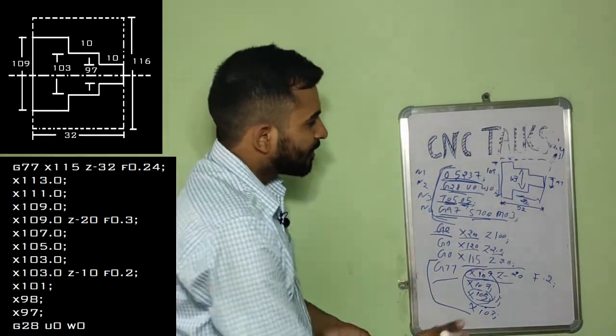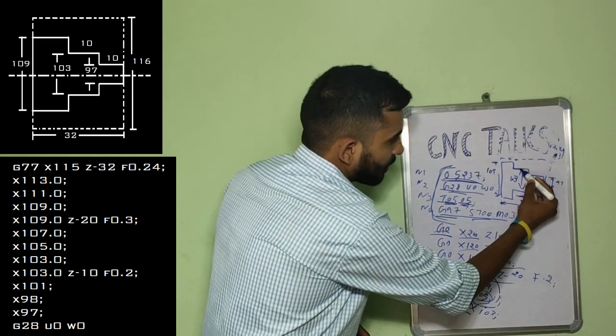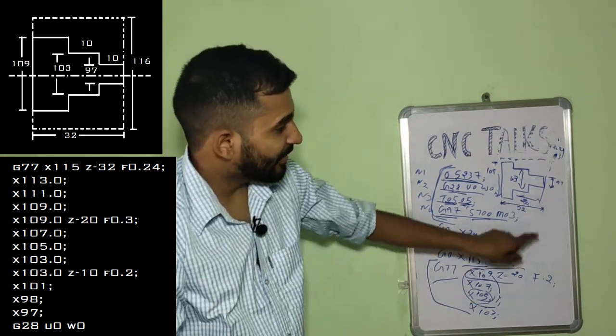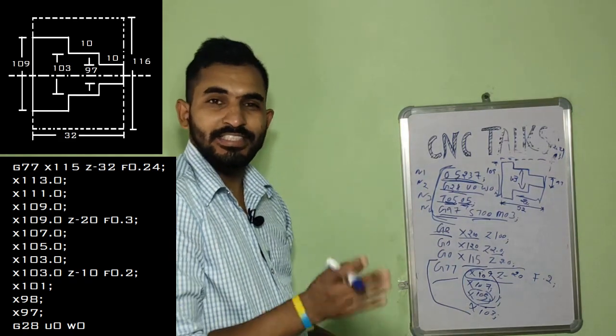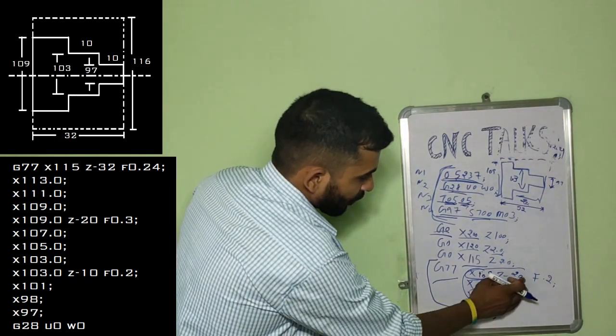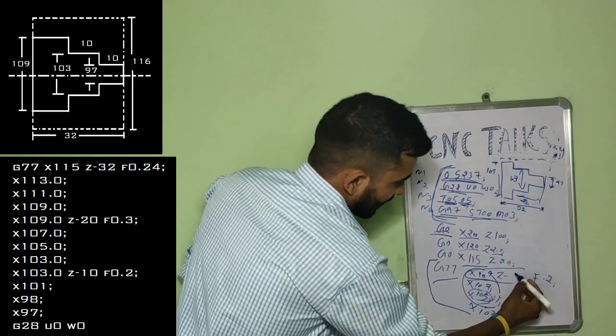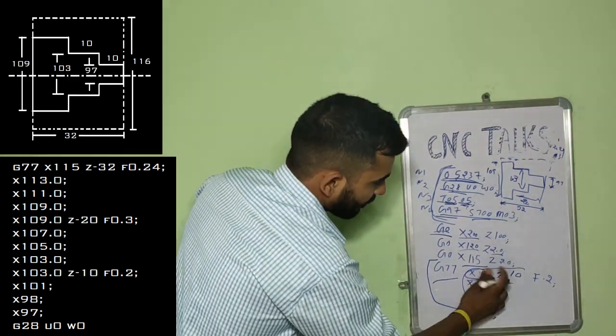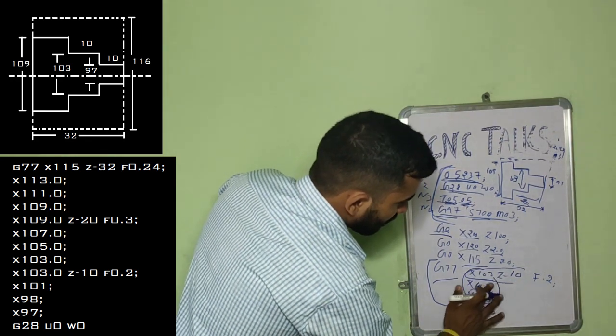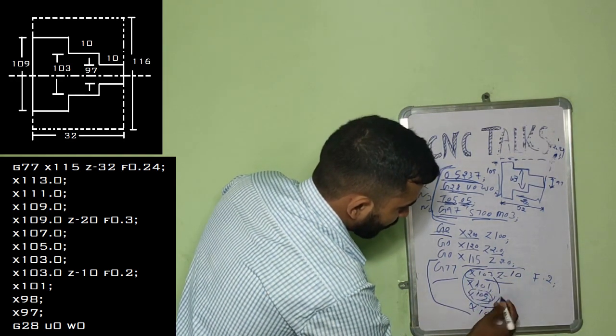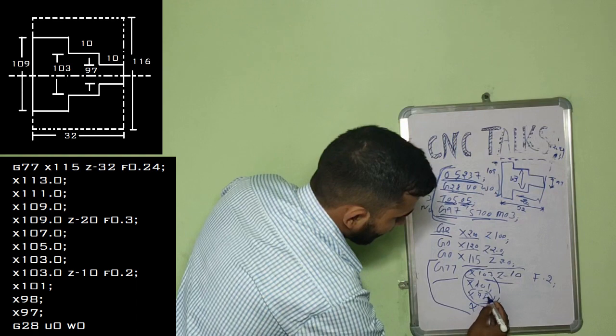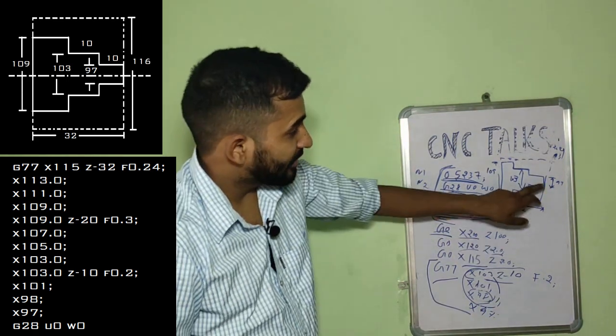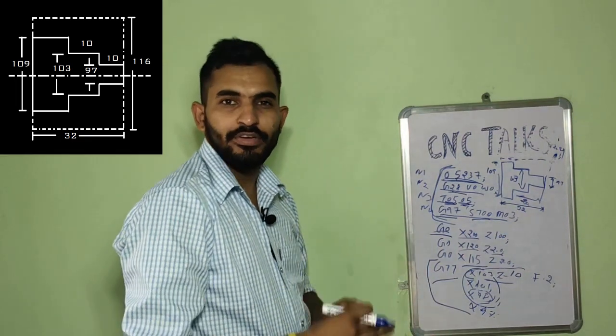Similarly, this way the further part is machined using G77. And again for the last component, we further change the values from Z minus 20 to Z minus 10. X109 to X103, again X101, 98 and 97. And hence the 97 mm diameter is achieved.